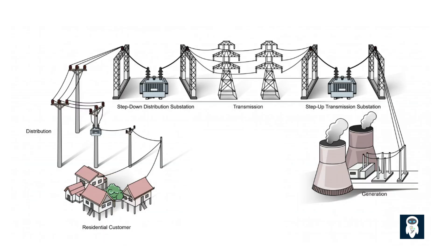One essential device in this system is the sectionalizer. Sectionalizers play a crucial role in ensuring the efficient and reliable operation of electrical distribution systems. These devices, designed to automatically isolate faulted sections of the network while maintaining power supply to unaffected areas, are integral components of modern power grids.